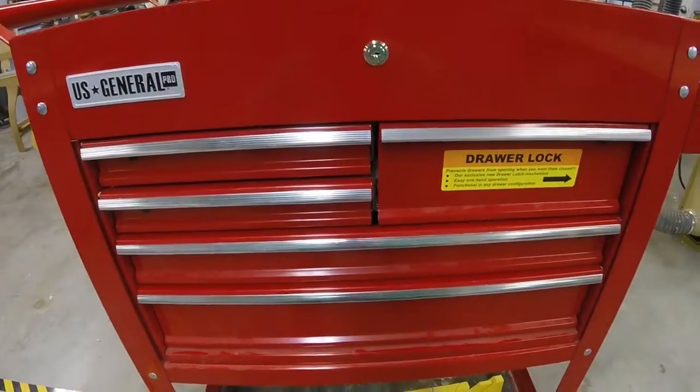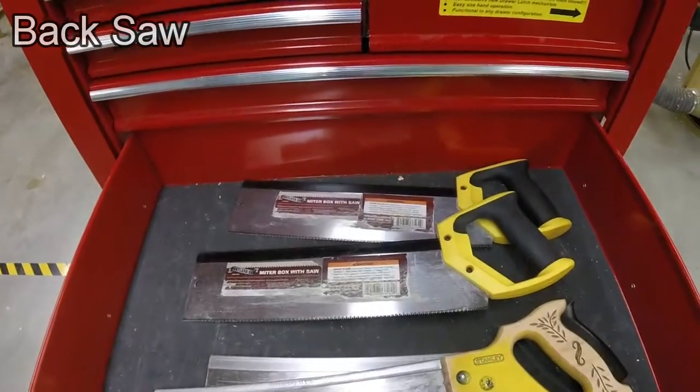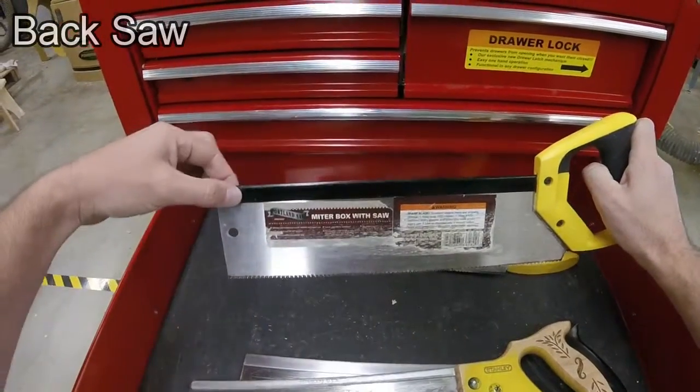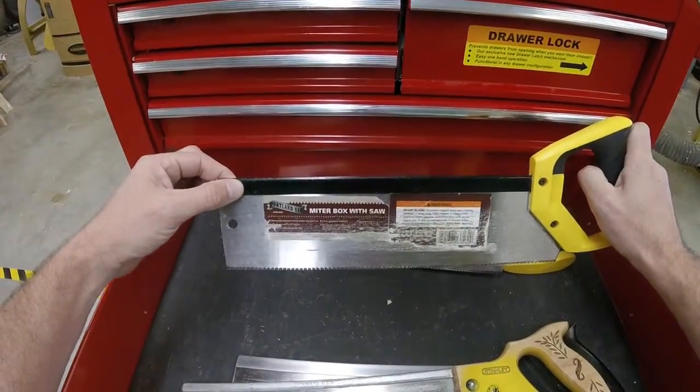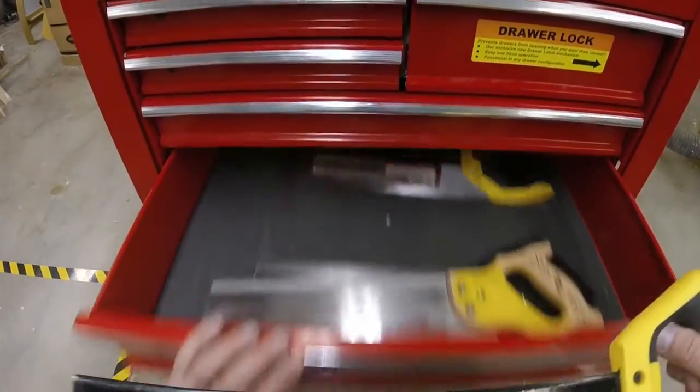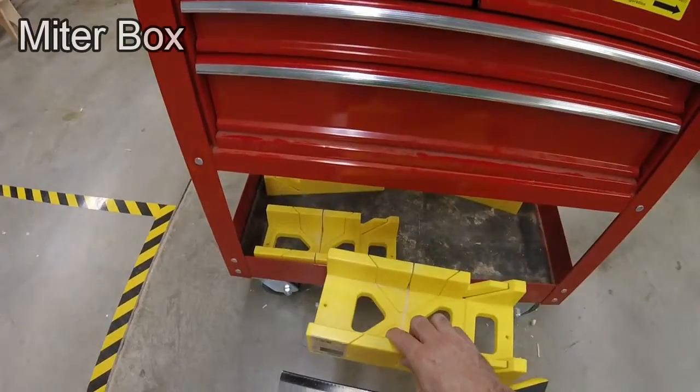The first tool on our list is the back saw. You'll find this in the bottom drawer. It's called the back saw because it's got a back support on here on the back of the blade. We'll use this in combination with the miter box. The miter box is found on the bottom of the tool cart.